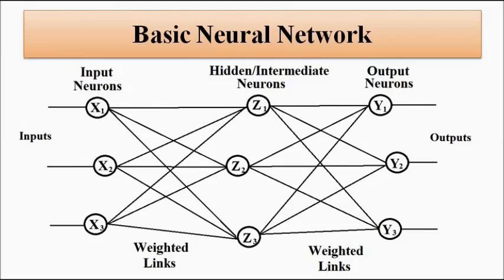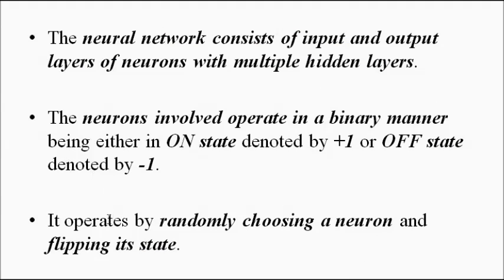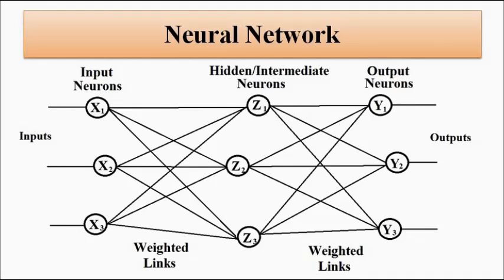This process continues until the error becomes zero, since there is a feedback desired output value. To summarize: we pick a particular neuron at random, flip its state, and depending on that, all other neuron input and output values change because of the synaptic connections and associated weights, ultimately changing the output values.